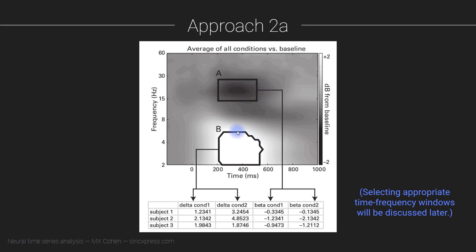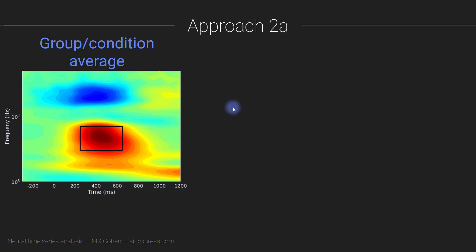I'll discuss in a later video some strategies for selecting time-frequency windows that are appropriate, sensitive, and meaningful. So to expand on this: you take your group and condition average — for example, 30 subjects averaged over five conditions — and the interpretation of that map is that it's telling you about general task engagement relative to baseline, showing which task-relevant regions are active, such as theta-band activity or beta-band suppression.